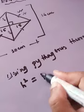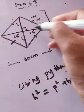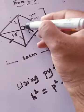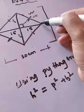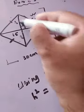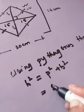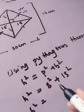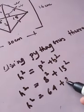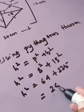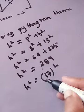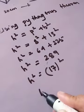Using Pythagoras theorem: H square equals P square plus B square. The hypotenuse is unknown. The perpendicular is 8 cm and the base is 15 cm. So H squared equals 8 squared plus 15 squared, which is 64 plus 225, giving 289. Since 17 times 17 is 289, H equals 17.